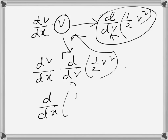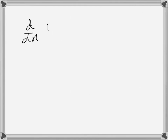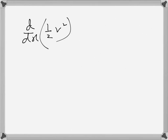So the acceleration can be written as d/dx of ½v², which is a function of v differentiated with respect to x. Going back to our original equation, this gives us d/dx(½v²) equals 2x plus 5.